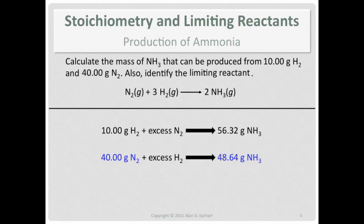So when you use the brute force method like this, you do one calculation for each reactant that you have. And assuming you're comparing it to a product like we are here, then you take a look at the different masses of product that can be generated, and your answer is the smallest one, because as soon as you make the smallest mass of ammonia, that reactant is out. So 48.64 grams of ammonia is the mass that can be produced under these conditions, and nitrogen gas is the limiting reactant because it's the reactant that runs out first.